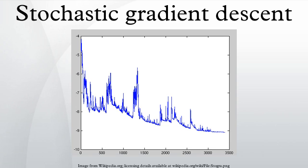The convergence of stochastic gradient descent has been analyzed using the theories of convex minimization and of stochastic approximation. Briefly, when the learning rates decrease with an appropriate rate, and subject to relatively mild assumptions, stochastic gradient descent converges almost surely to a global minimum when the objective function is convex or pseudo-convex, and otherwise converges almost surely to a local minimum. This is in fact a consequence of the Robbins-Siegmund theorem.